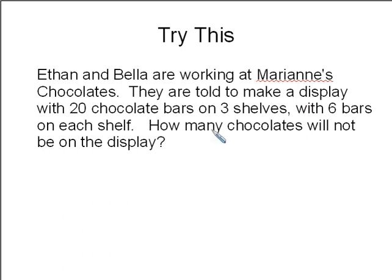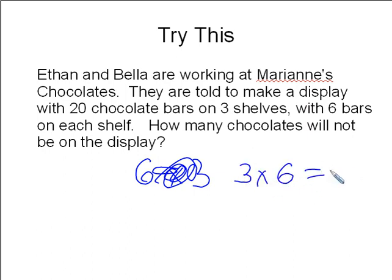Eason and Bella are working at Mary Ann's Chocolate. They are told to make a display with 20 chocolate bars on 3 shelves, with 6 bars on each shelf. How many chocolate bars do not be on this display? So 3 times 6 equals 18. 20 minus 18 equals 2, our answer.